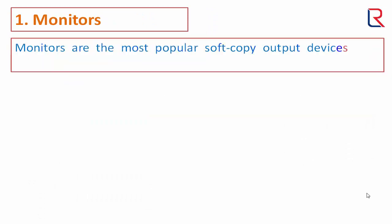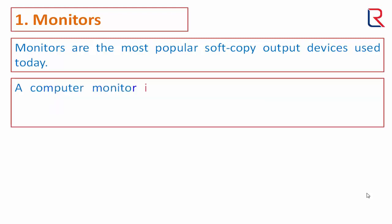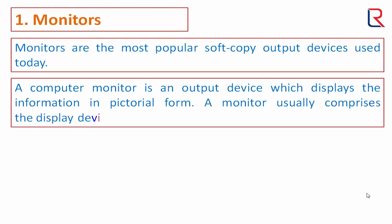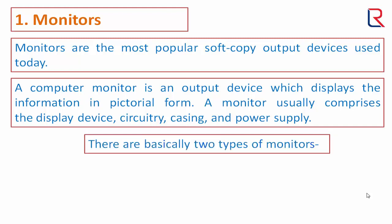Monitors are the most popular soft copy output devices used today. A computer monitor is an output device which displays information in pictorial form. A monitor usually comprises the display device, circuitry, casing, and power supply. There are basically two types of monitors: CRT and flat panel displays including LCD, LED, and TFT.